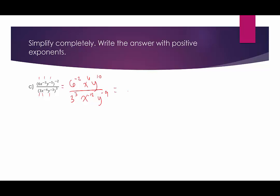Now, anything with a negative exponent, I'm going to switch its location. The 6 to the negative 2 will become 6 squared in the denominator. The 3 cubed is happy down there. The x to the 6th in the numerator was fine. y to the 10th was fine. x to the 12th goes to the numerator, and y to the 9th goes to the numerator. So now all the variables are in the numerator: x to the 6th and x to the 12th give 18 factors of x, and y to the 10th and y to the 9th give 19 factors of y in the numerator.